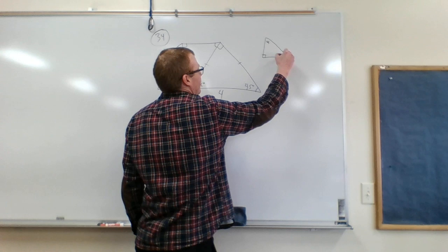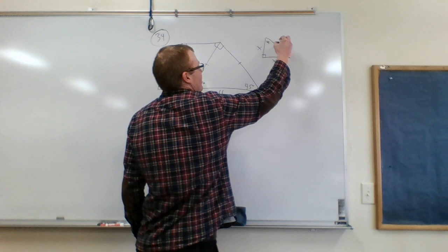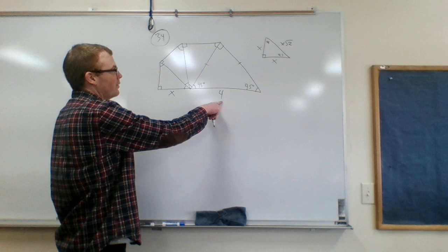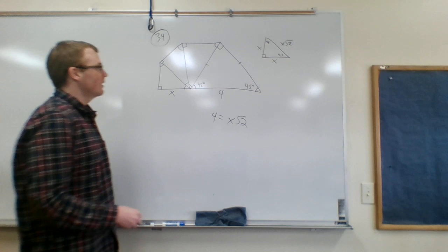We know if the sides are x and the hypotenuse is x square root of 2. Okay, so if this is 4, so 4 equals x square root of 2.